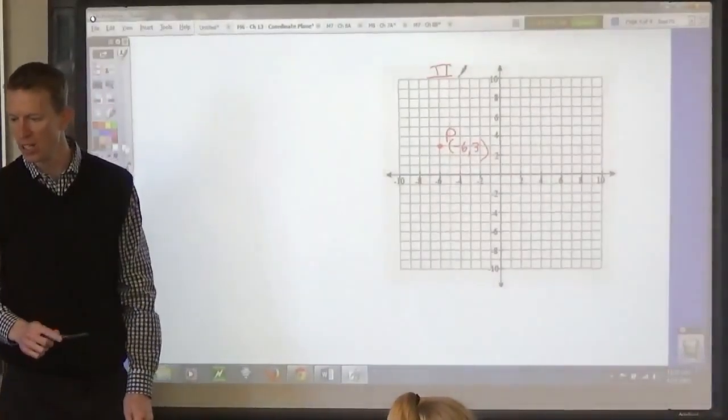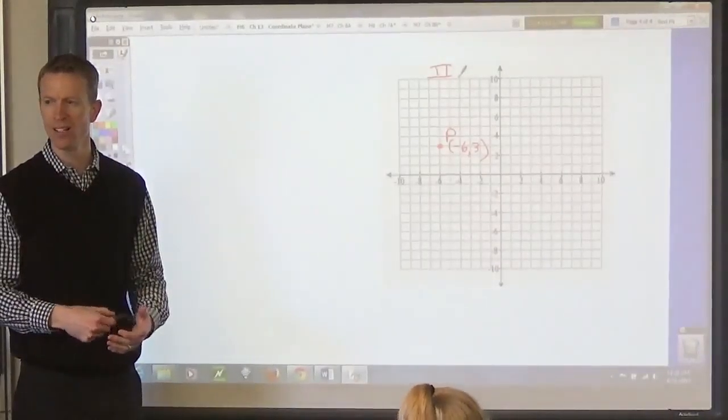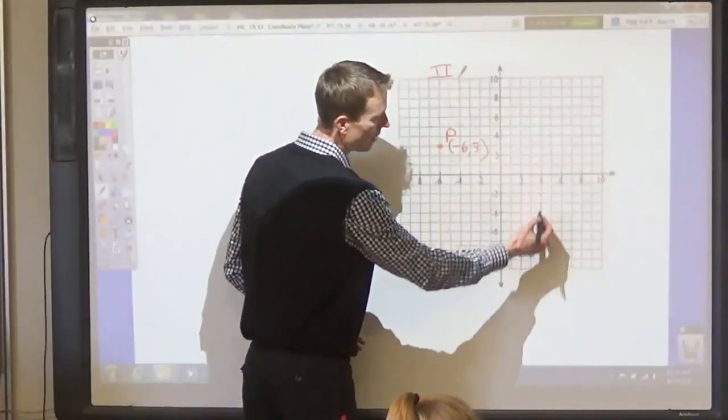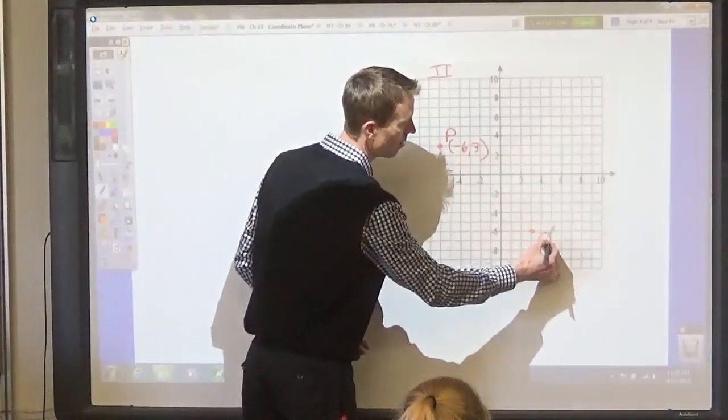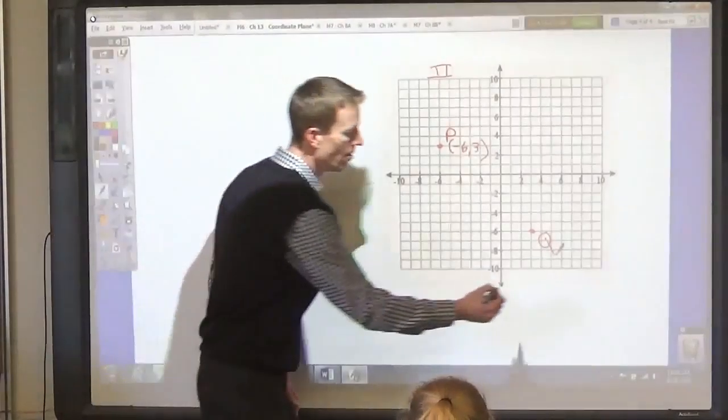How about point Q? Gray? 3, negative 6. We marked that one before, didn't we? What quadrant is that in, class? 4.